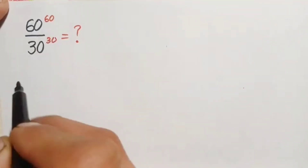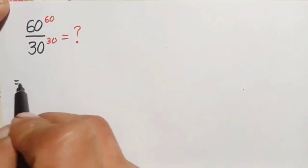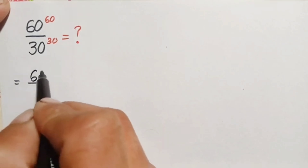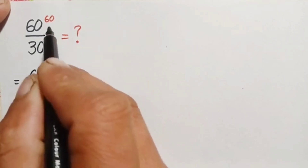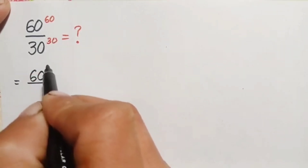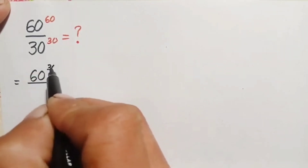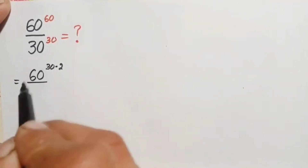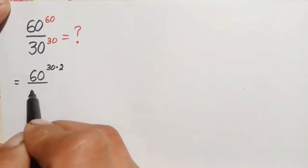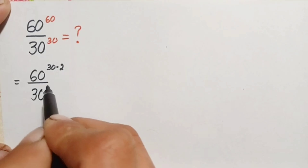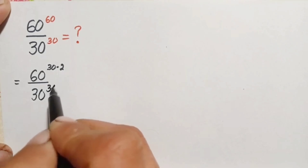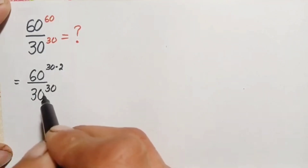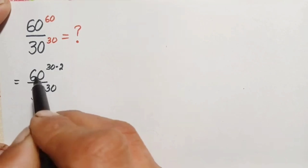So we can write 60 raised to power 60 — here we can write the base 60 as 30 times 2, which equals 60 — divided by the denominator 30 raised to power 30. Now in the numerator we will use the exponential identity for a raised to power m times n.